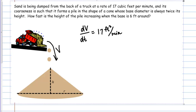Skimming through the problem for more rates: it forms a pile in the shape of a cone, diameter is always twice its height. How fast is the height of the pile increasing? So what I'm actually looking for is dh/dt. That's all the information given about rates — specifically I'm looking for dh/dt when the base is 6 feet around, and we'll deal with that piece of information later.